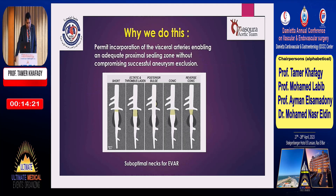Why do we do this? This permits incorporation of the visceral arteries, enabling an adequate proximal sealing zone without compromising successful aneurysm exclusion — when there is a short neck, ectatic and thrombus-laden neck, posterior bulge of the neck, and conical or reversed conical neck.